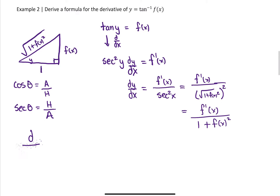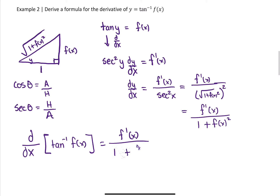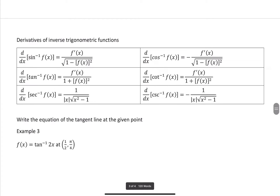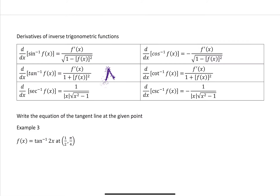For tangent inverse, the derivative of tangent inverse of f of x is the derivative of the function divided by 1 plus the function squared. Those are the two big ones we need to know. Below we have a table covering the other four inverse trig derivatives. Cosine inverse and cotangent inverse differ only by a negative sign, and we're really never going to use secant inverse and cosecant inverse.